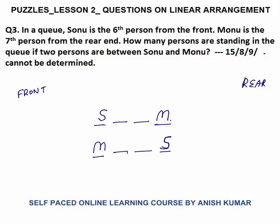We fill the other information using the first two statements. Sonu is 6th from the front, meaning 5 persons are to his left — persons 1 through 5. Sonu is the 6th one. Monu is 7th from the rear end, meaning 6 more persons are to his right — the 7th person from the rear end.